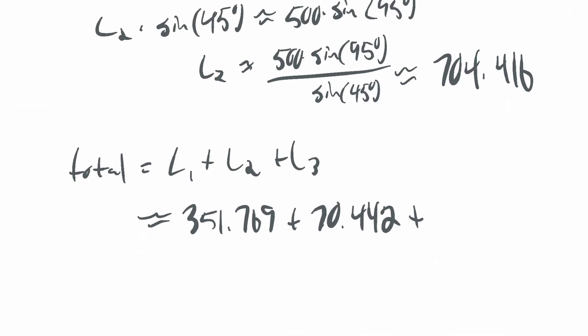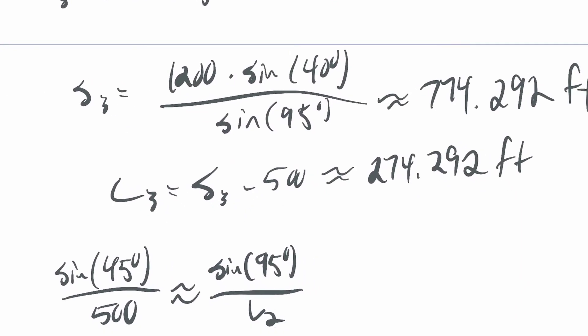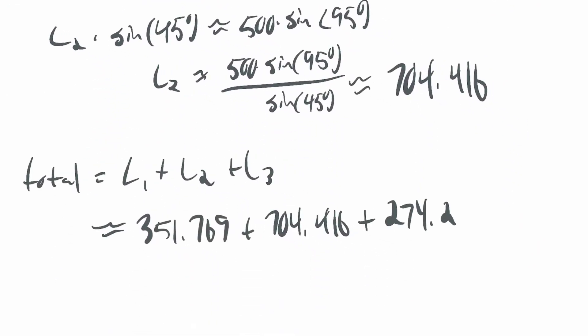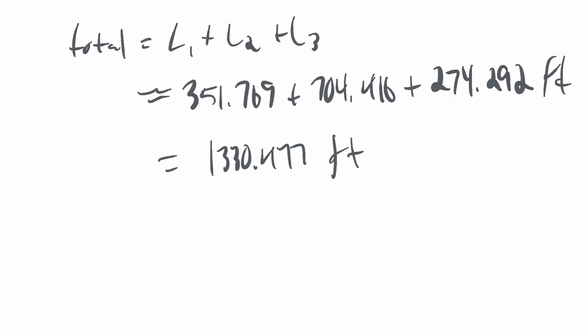And then L3, 274.292. So, 351.769 plus 704.416 plus 274.292, I get 1330.477 feet. So that is the total path that diverts from the original planned road.